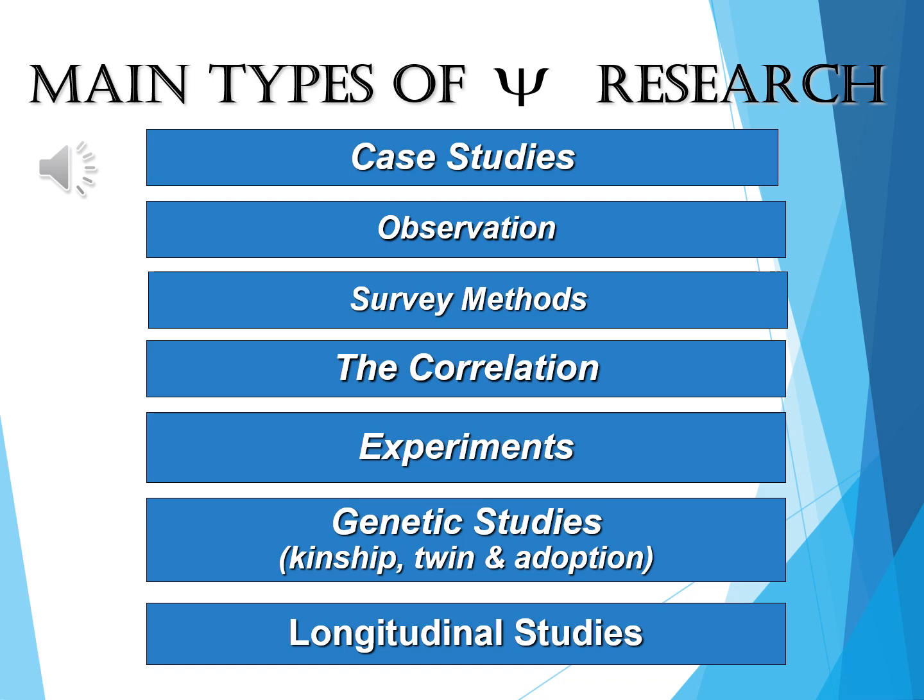On this slide we see many of the major research methods used in psychological research. Slides like this where you have a heading and a list of items are great study tools. After you've gone through the material and feel reasonably comfortable with it, go ahead and cover up each item and see how many you can remember by name and recall any details below the title. It gives you great feedback on what you know and don't know. On the subsequent slides we'll be looking at each of these individual research methods.